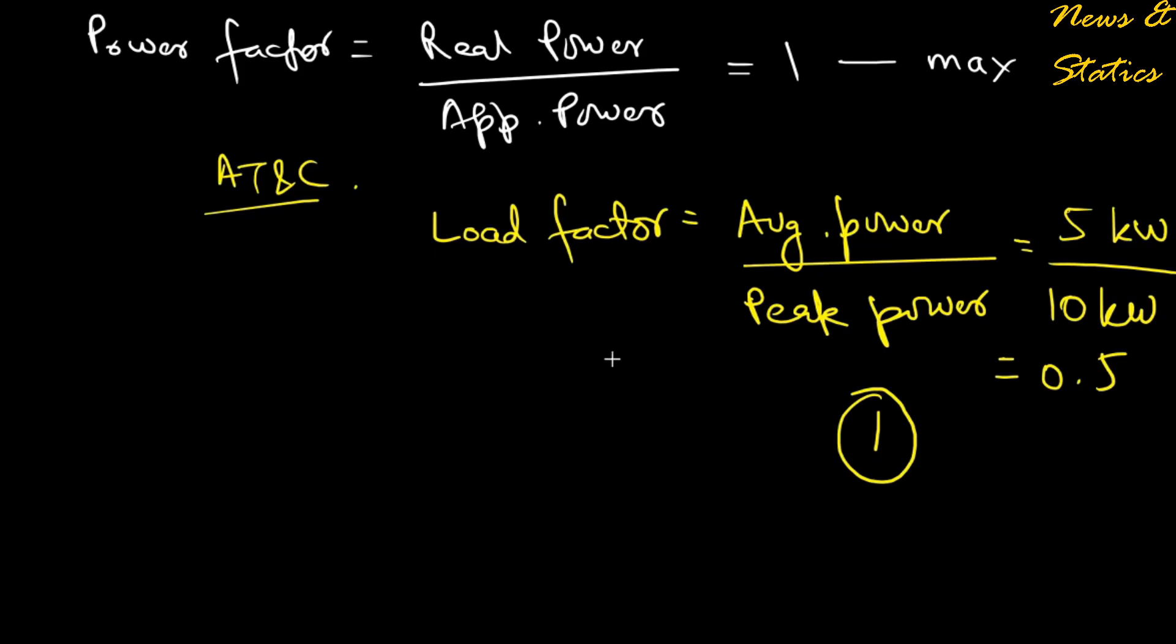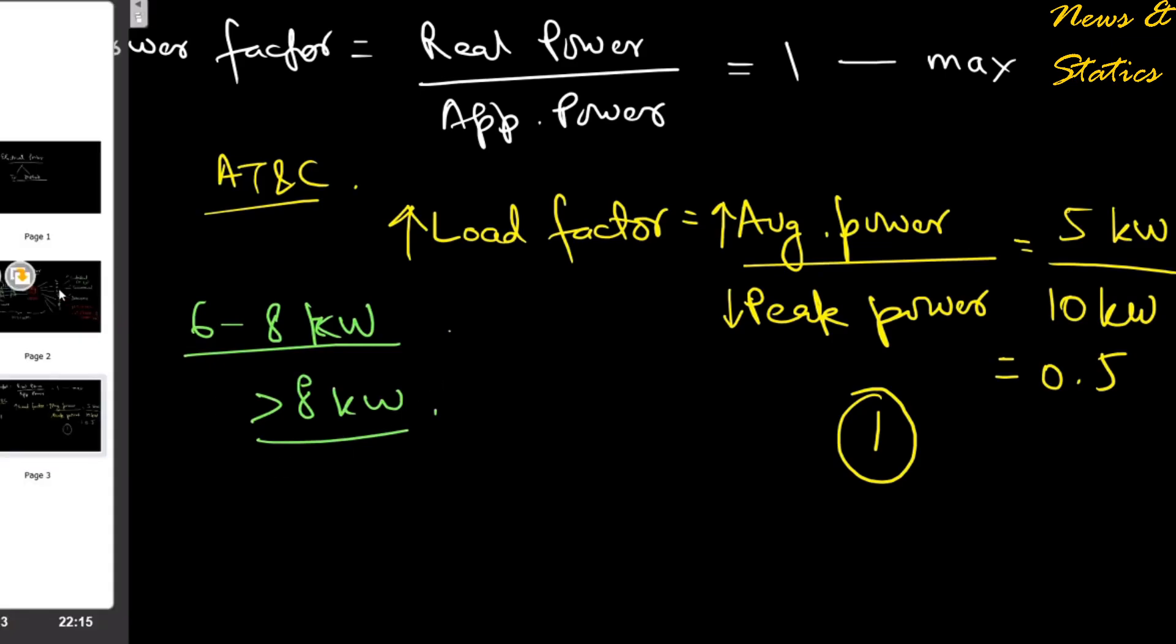To increase the load factor, I can either increase average power or decrease peak power. If I usually use power in the range of 6 to 8 kilowatt, it should be the duty of the DISCOMs to penalize me if I consume power greater than 8 kilowatt. This is just an illustrative example - that kind of tariff should be there which penalizes for exceeding peak consumption.